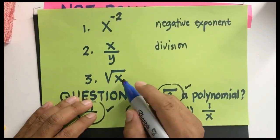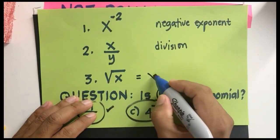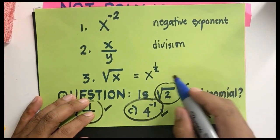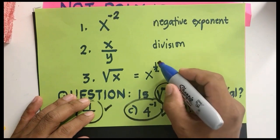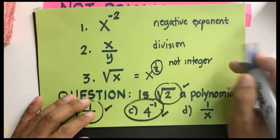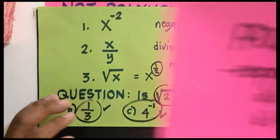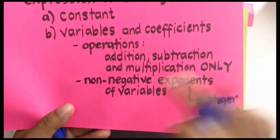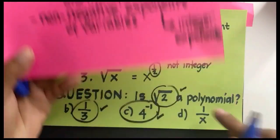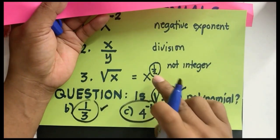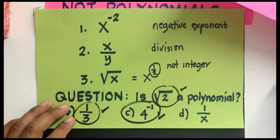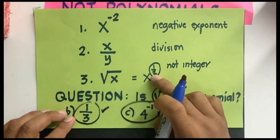The square root of x can be written as x raised to the 1/2. Since 1/2 is not an integer, and our definition requires a non-negative integer exponent, the square root of x is not considered a polynomial. Yes, 1/2 is non-negative, but it is not an integer.